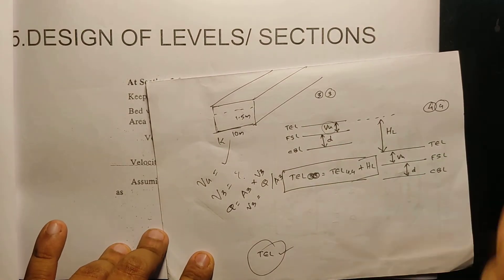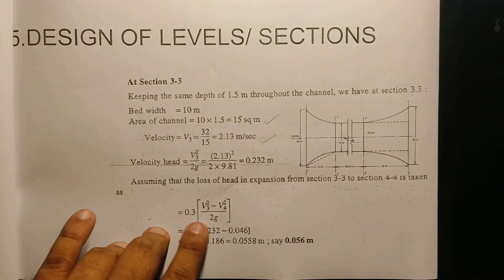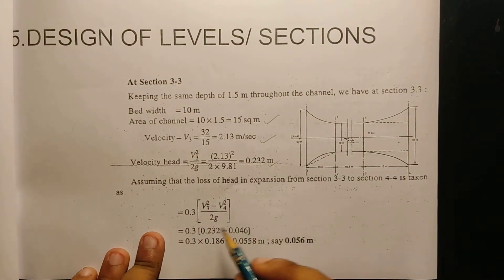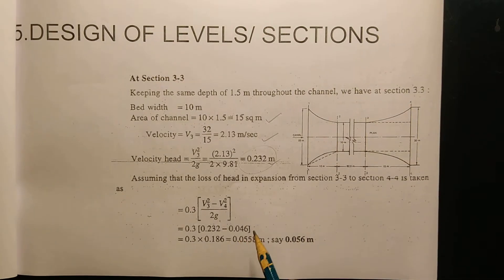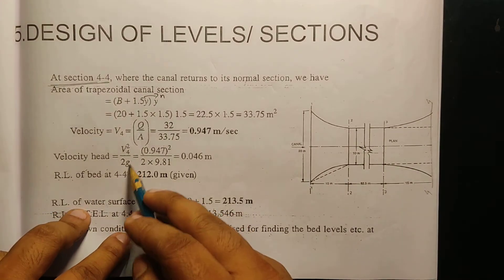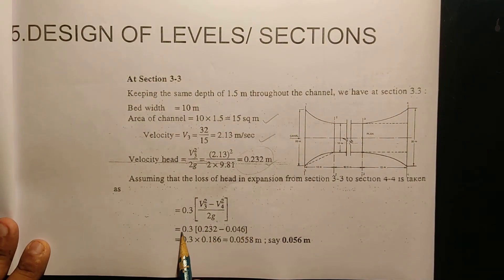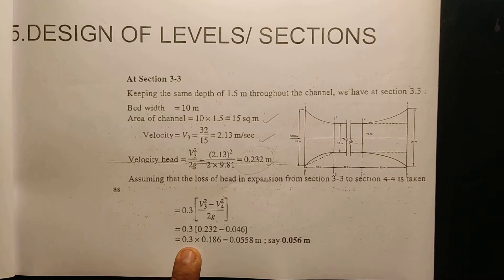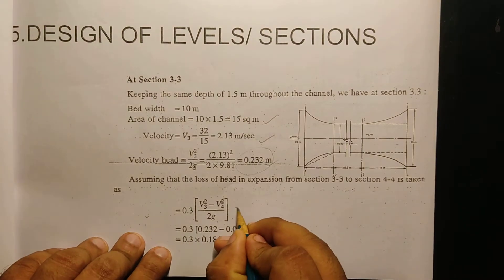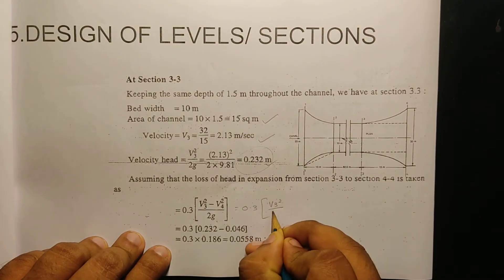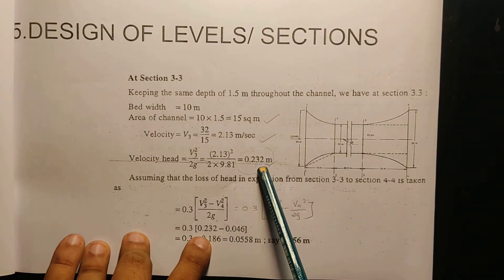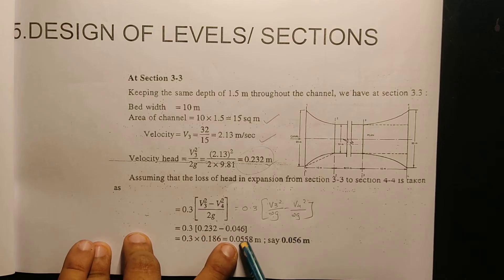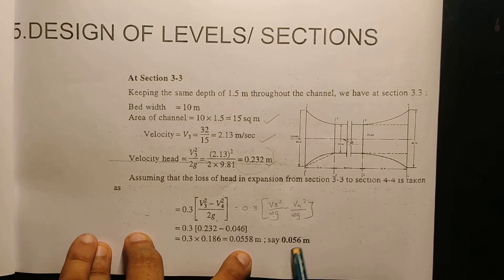Now we have to calculate the velocity head. We use V3² divided by 2g, and then V4² divided by 2g. Then we subtract: V3²/2g minus V4²/2g, and multiply by 0.3. So the head loss equals 0.3 into (V3²/2g minus V4²/2g), and subtracting gives us 0.056 meters.